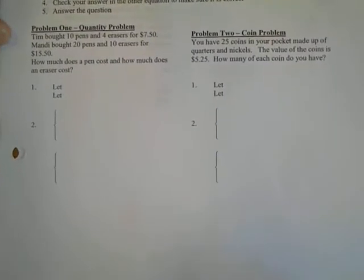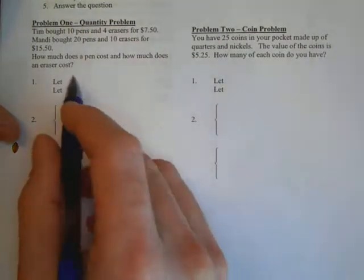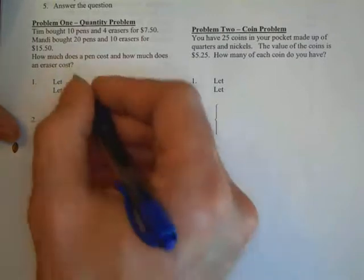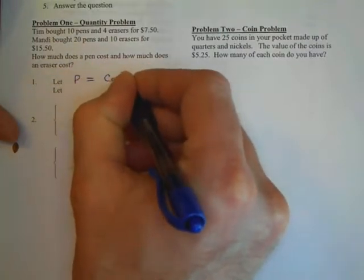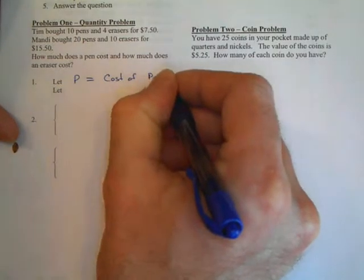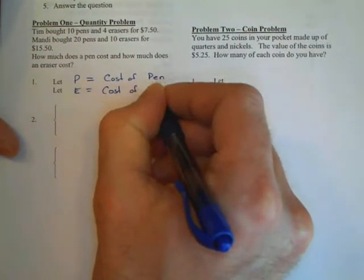We have two examples on this page. Problem one: Tim bought 10 pens and 4 erasers for $7.50. Mandy bought 20 pens and 10 erasers for $15.50. The question is how much does a pen cost and how much does an eraser cost? So P is going to be the cost of a pen, and E is going to be the cost of an eraser.